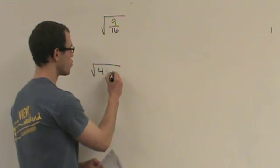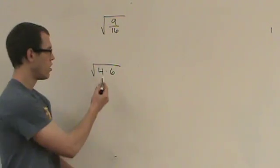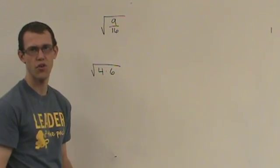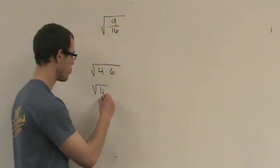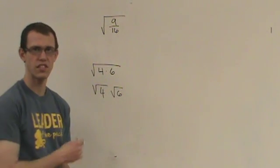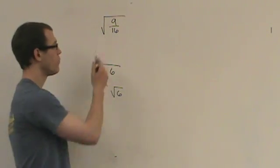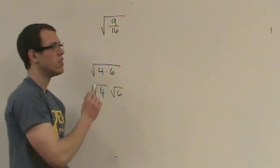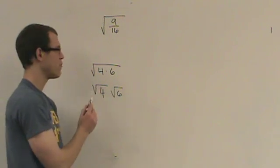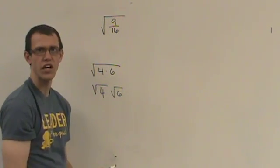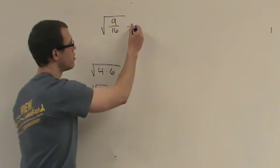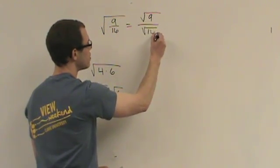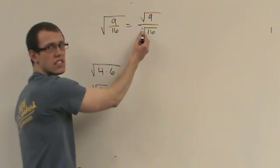When you have something like the square root of 4 times 6, where 4 is being multiplied by 6, we simply break them apart into their own houses. So we break this apart into the square root of 4 times the square root of 6 — the 4 and the 6 now have their own houses. Multiplication in some ways is like division. So when we see 9 divided by 16 all under one radical, it's the same as 4 times 6 under one radical. We give each number its own house.